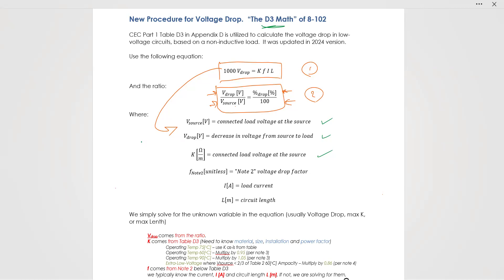Note two is one of those notes - it's a voltage drop factor. And then there's a couple more notes, actually, that I'm going to show you down here from note three and note four. The load current is the current we're trying to provide for our load, and then this is the length of the circuit. Things get just a little bit fuzzy with the K value and a factor.